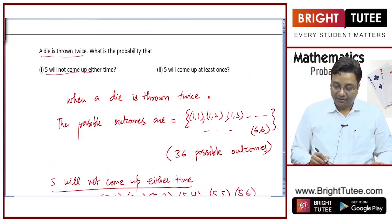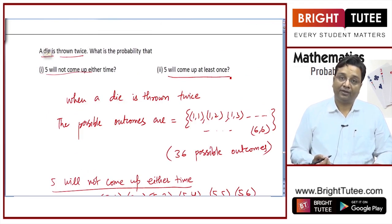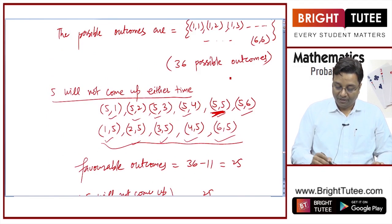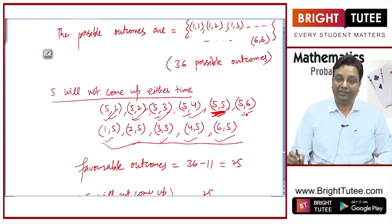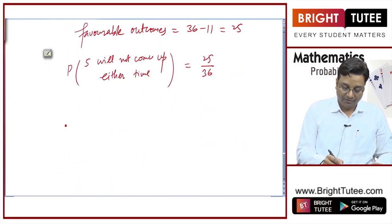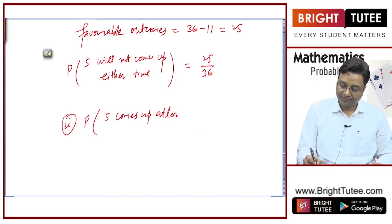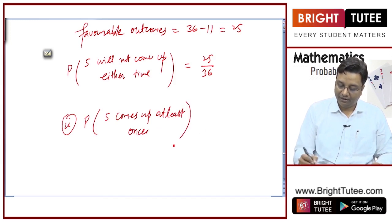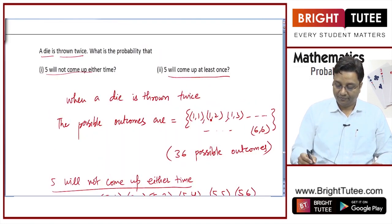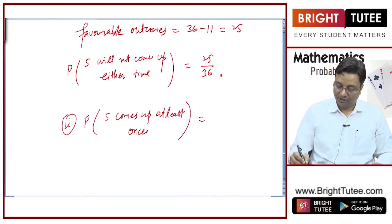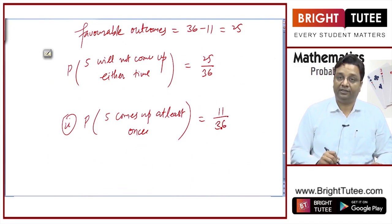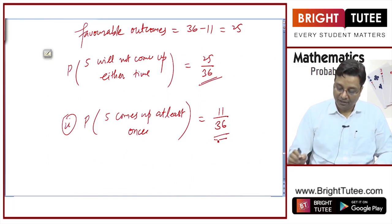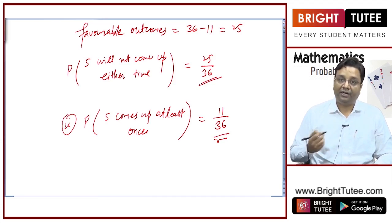For the second part: probability that 5 comes up at least once. Those 11 cases where 5 appeared now become our favorable cases. So the probability is 11/36. Alternatively, you could subtract 25/36 from 1 and get the same answer. So 11/36 is the probability that 5 comes up at least once.